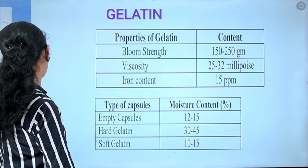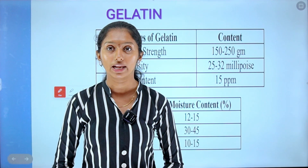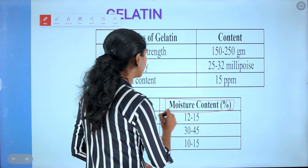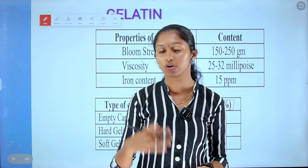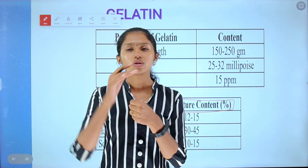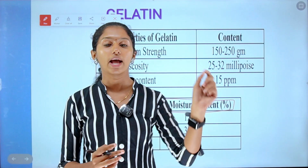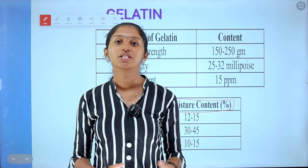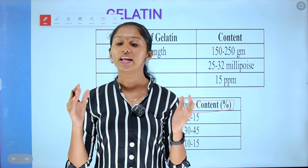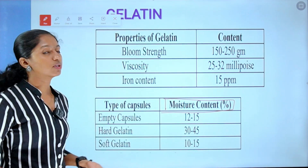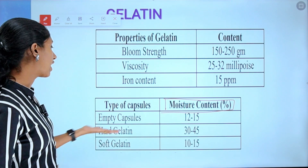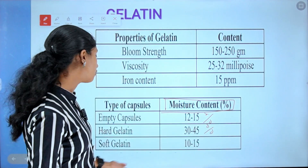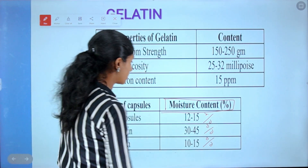Iron content of gelatin is 15 ppm (parts per million). Moisture content is also important: for hard gelatin capsules, moisture content is 30 to 45%, and for soft gelatin capsules, moisture content is 10 to 15%.